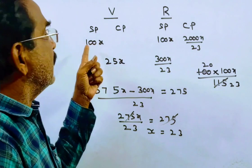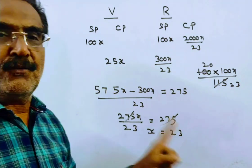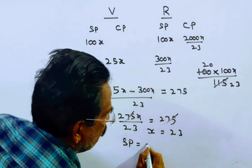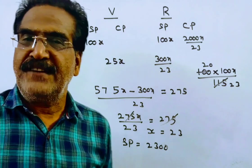We want the selling price. Selling price is 100x, which is 100 times 23, equals 2300. So the selling price is 2300. Thank you, friends.